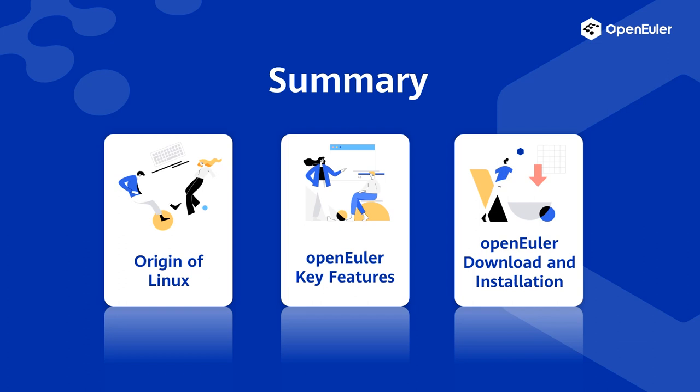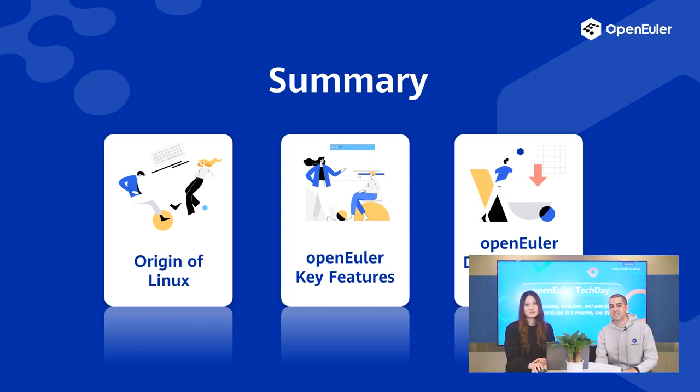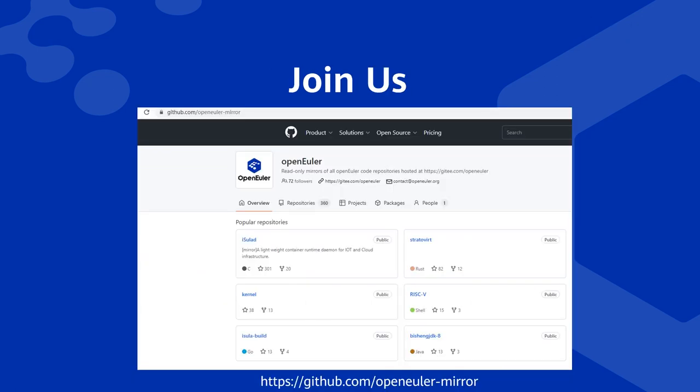We are at the end of today's livestream. Let's go over what we've learned: the origins of Linux, the key features of OpenEuler, and the detailed steps for downloading and installing OpenEuler. If you want to know more and engage in community contributions, please visit our GitHub repo — we can't wait to see you in the OpenEuler community. In the next episode of OpenEuler Tech Day, we'll go into more details about OpenEuler key features and practices. Stay tuned — that's all for today, see you next time!